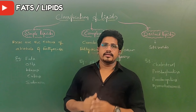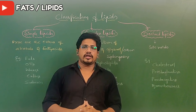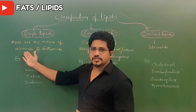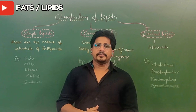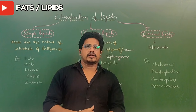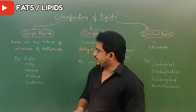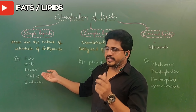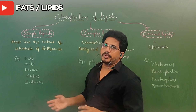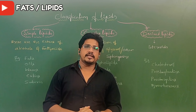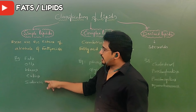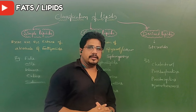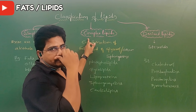Simple lipids are also called neutral fats. These neutral fats are made up of combinations of alcohols and fatty acids only — there are no other components involved in their structure. Mainly fats, oils, waxes, cutins, and suberins are secretions present in plants. All these come under simple lipids.